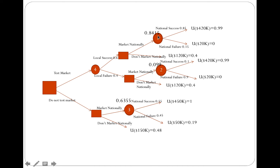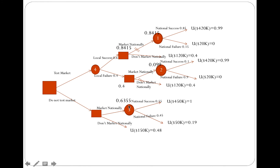Now I want to make a decision between the calculated expected utilities. Between 0.4 and 0.84, 0.84 is clearly the better option, so I place a hash mark to indicate I chose that decision and write its value next to it. Similarly, between the next two options, 0.4 has higher utility, so do not market nationally is my decision there. Also, between 0.48 and 0.6355, since 0.6355 has the highest value, that becomes my decision.